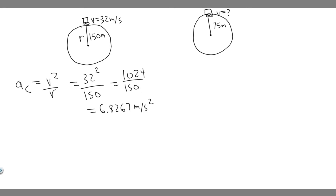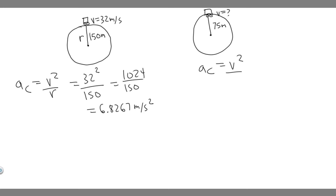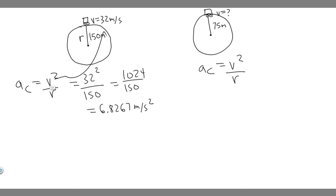Now that we know the centripetal acceleration of the first curve, we know it's going to be the same as the second one. Since we know a_c equals v squared over r, we know the radius of the second curve, we know the centripetal acceleration, and we can solve for the maximum velocity. This is the maximum centripetal acceleration because it came from the max velocity of the first curve, so it will give us the maximum velocity the truck can go around the second curve.